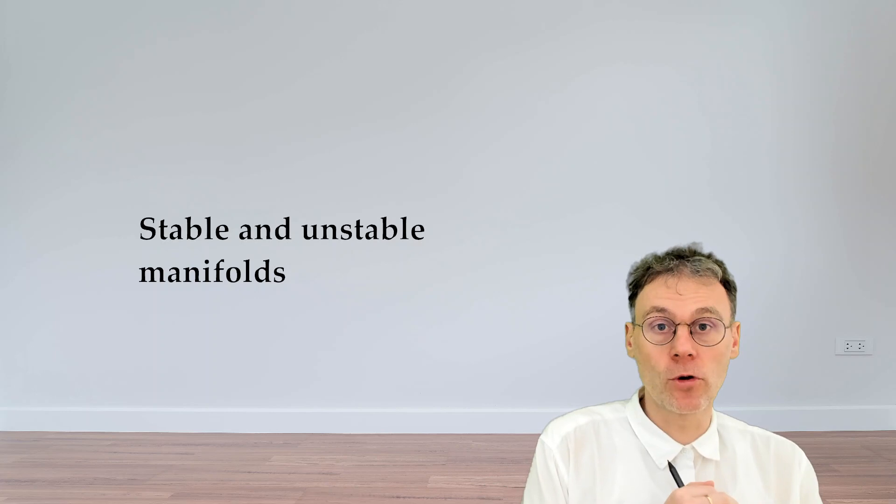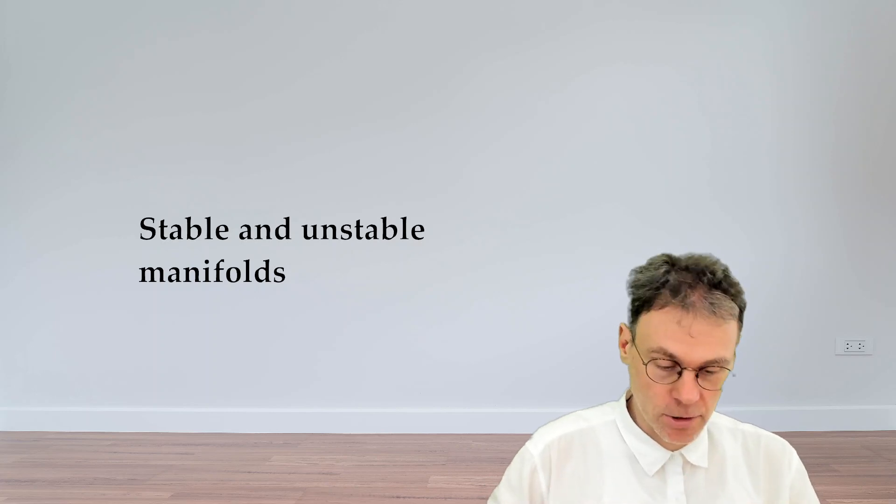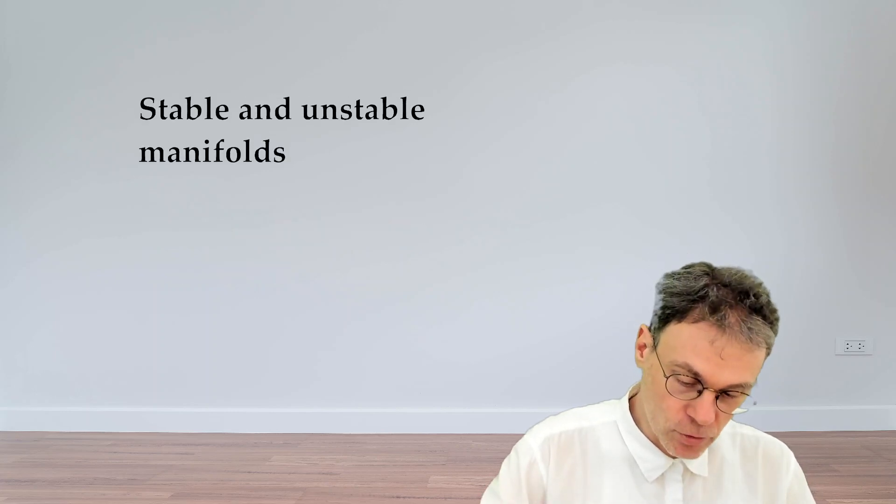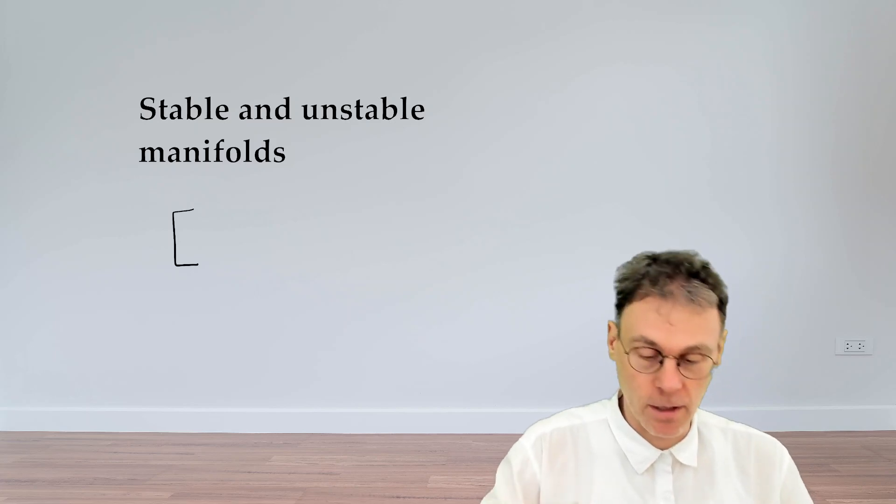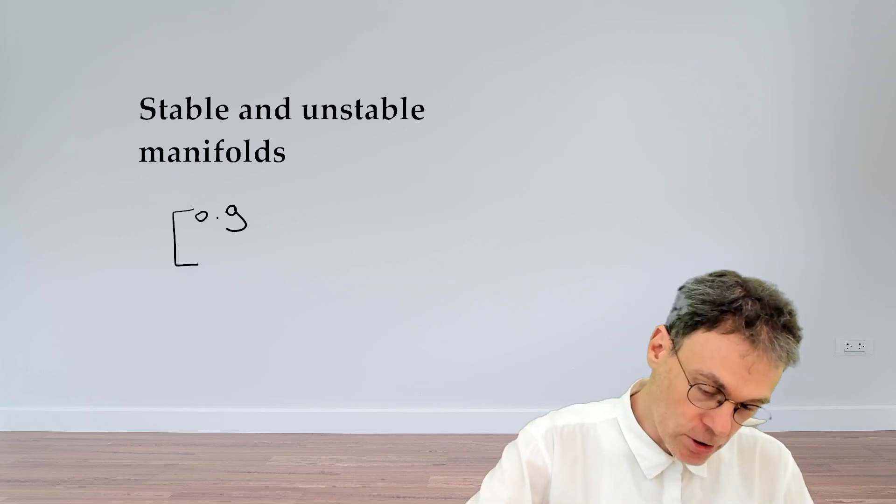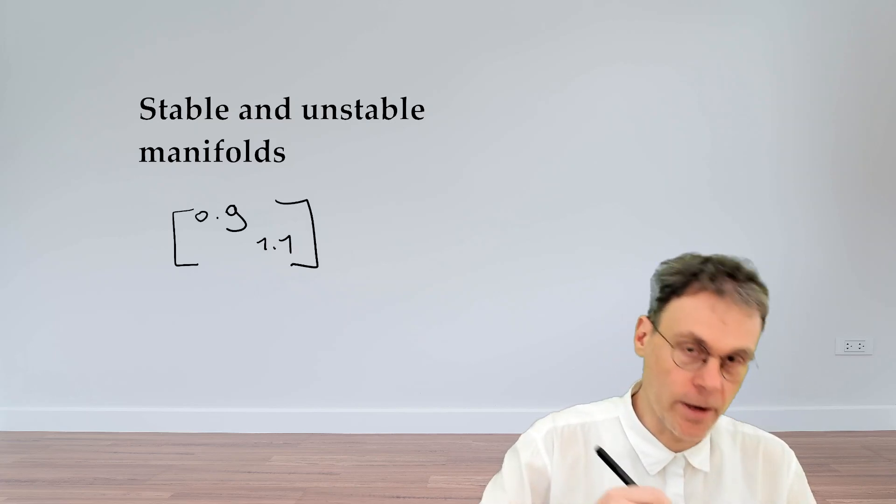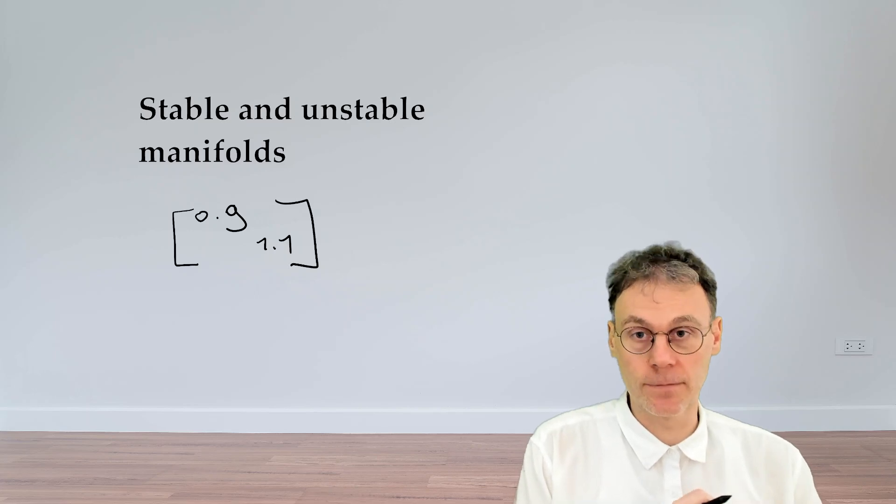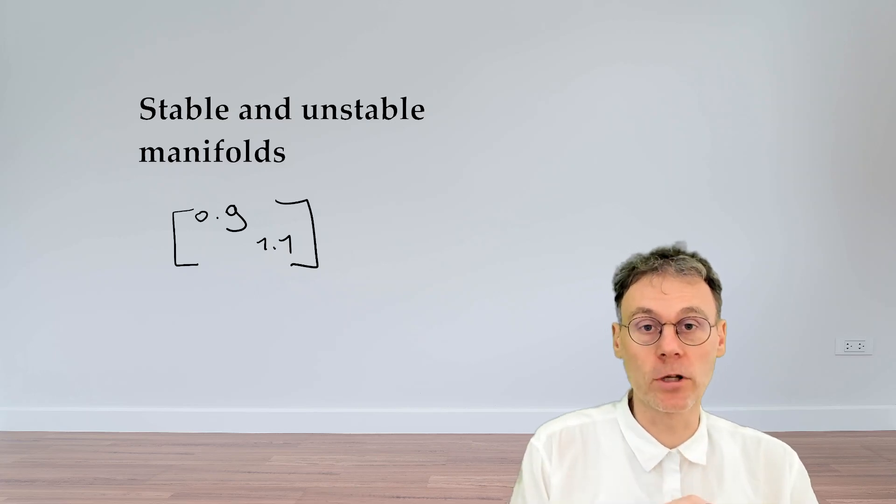In this video let's talk some more about saddle points and let's start from the simple example of a two-dimensional linear map given by the following diagonal matrix with the following diagonal elements. So as you know a saddle point will have an attracting and repelling direction.